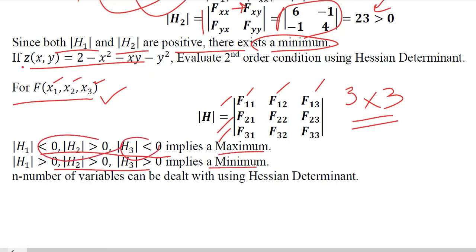So we can deal with any n number of independent variables by finding the Hessian determinant.